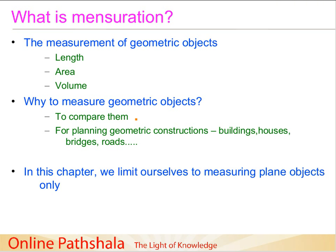In this chapter, we are going to limit ourselves to measuring plane objects — that is, two-dimensional objects, such as a rectangle. We will focus on the length and area aspects of measurement of geometric objects. The volume part is going to be covered in the next grade. That was about mensuration. See you in the next session on perimeter.